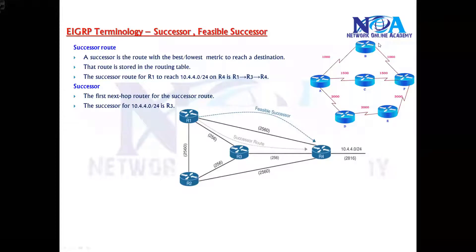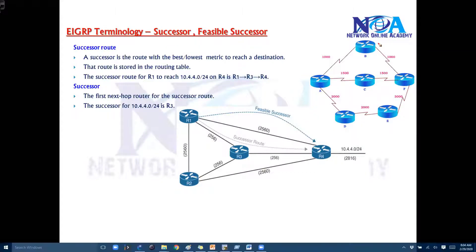Next, we'll try to understand some of the advanced terminologies used in EIGRP. There is something called successor and feasible successor — what they are exactly. In simple words, a successor is nothing but the best route; we call it the best route to the destination.